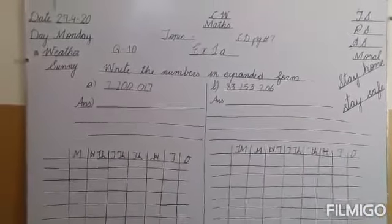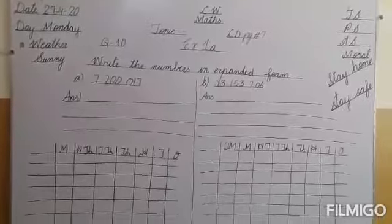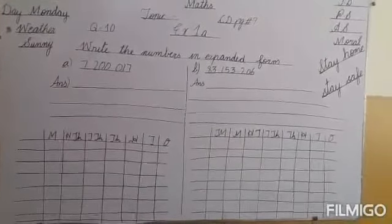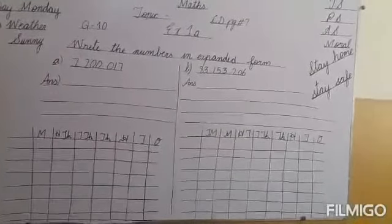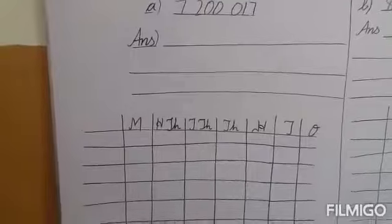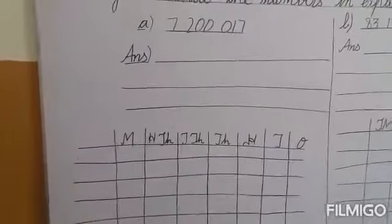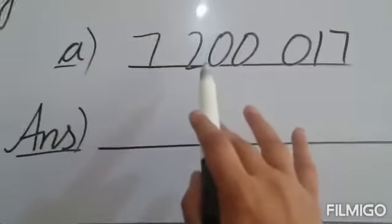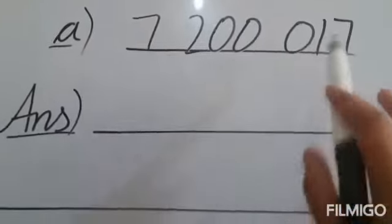Now let us do question number 10. Question number 10 is: write the numbers in expanded form. To write a number in expanded form, we have to make a place value chart. As you know, expanded form is the addition of the place values of the number. The question is 7,200,017.